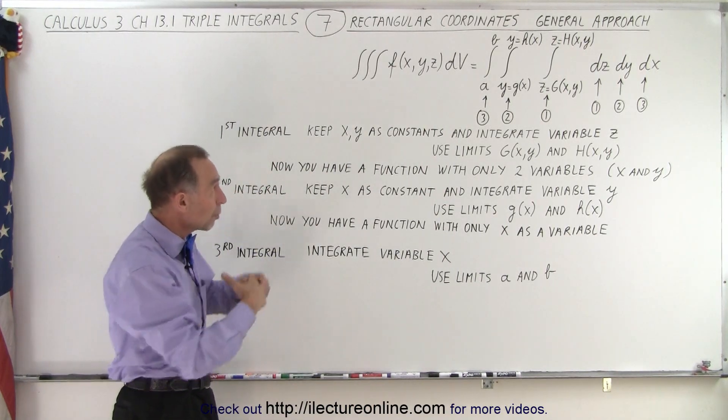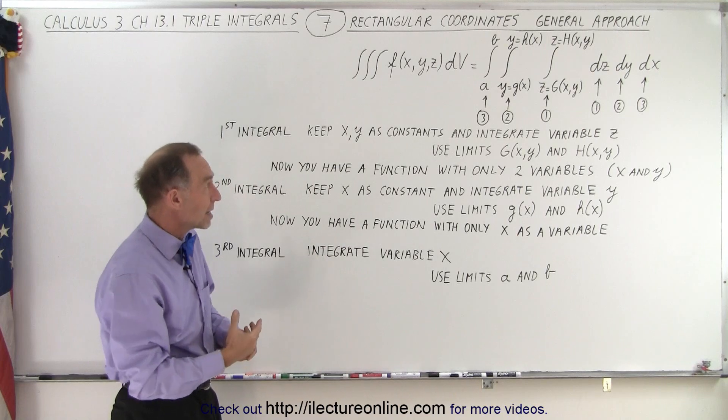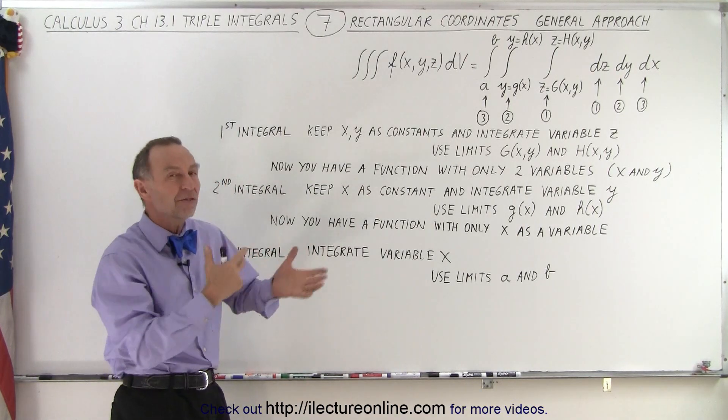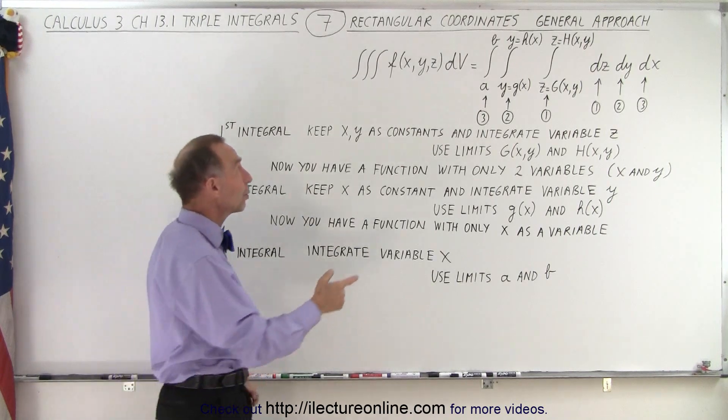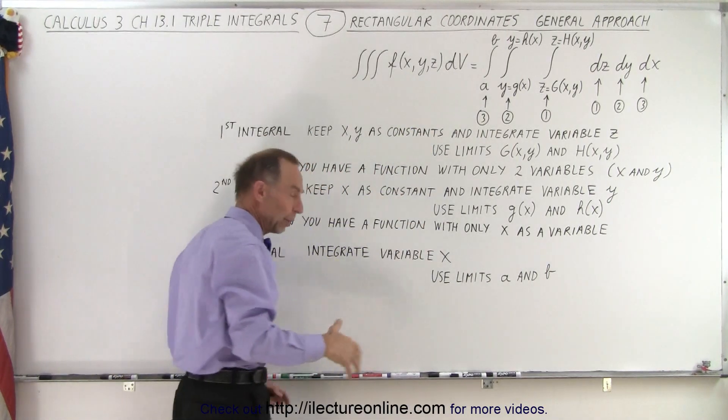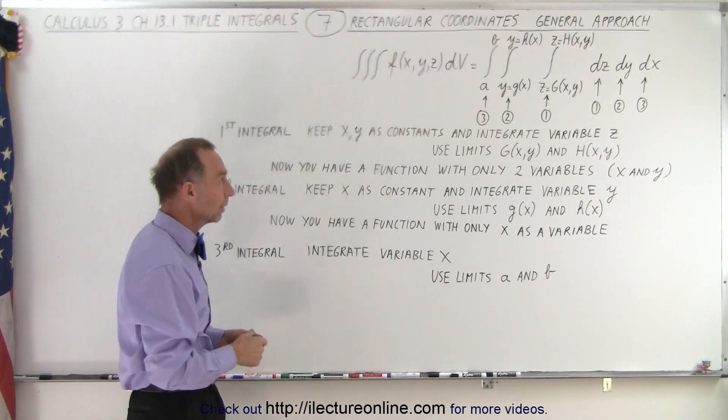But we could also find the moment of inertia, the mass, the density. We could find different kinds of things. And in that case, we will have some sort of function which depends on x, y, and z. And we'll show you some examples of that as well.